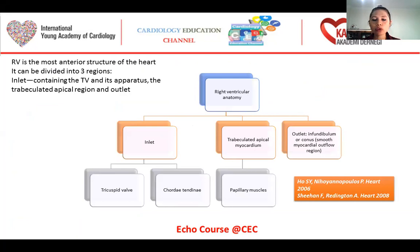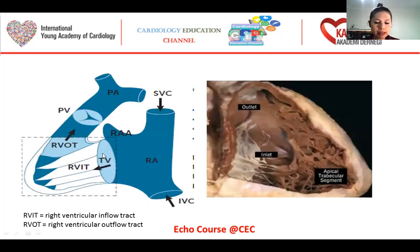As we know, the right ventricle is the most anterior structure of the heart. It can be divided into three regions: the inlet part, the trabeculated apical myocardium, and the outlet part, which can also be called the infundibulum or conus. Here we see the tricuspid valve and its apparatus, chordae tendineae, containing the inlet part, the apical segment, the trabeculated part, and the right ventricular outlet.